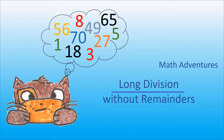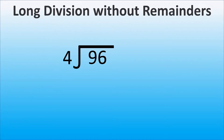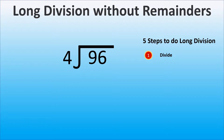Did you know that it takes only five steps to follow to do long division? The first step is to divide. We start long division from the number that is in the greatest place value in the dividend and work our way to the number in the least place value.